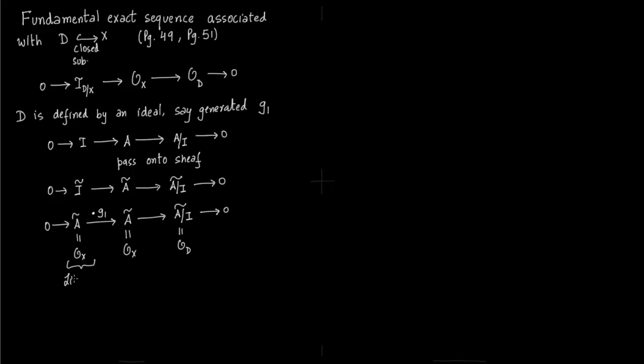That is what makes it a line bundle. You have this kernel sheaf, now A tilde looks like a line bundle because it looks exactly like O of X. You're just multiplying by g1. This line bundle you obtained because you could multiply by g1, and g1 is nothing but the equation of the closed subvariety which is irreducible.